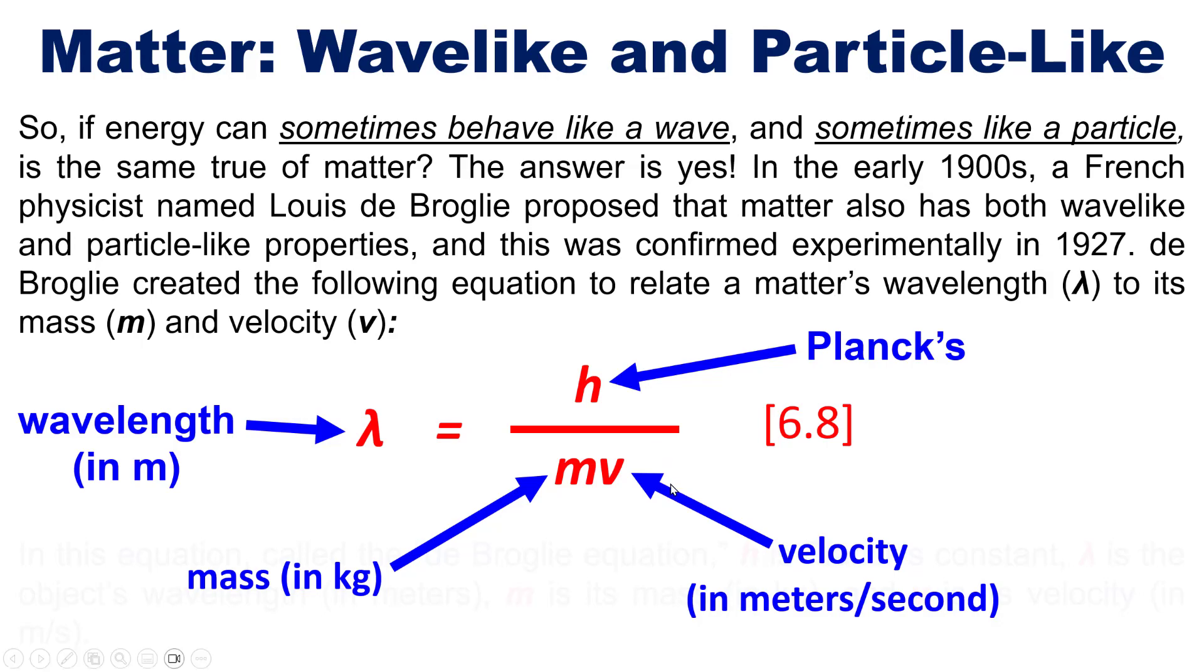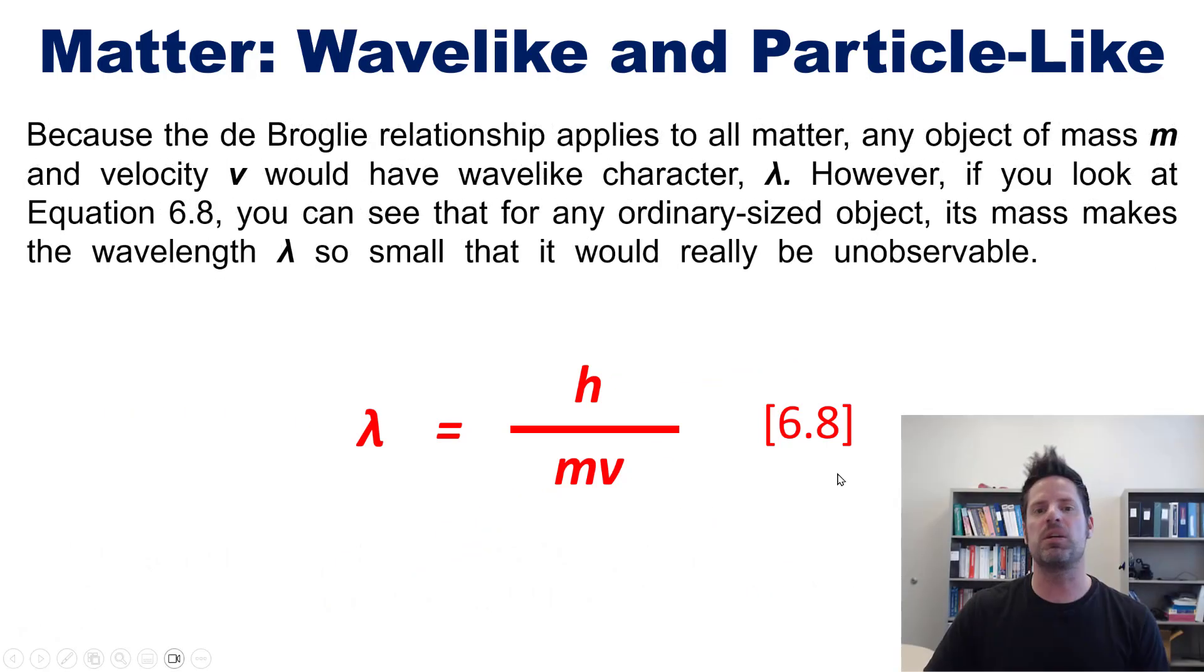Sorry about that. I don't make the stuff up. I just teach it. Now, because the de Broglie relationship applies to all matter, any object of mass m and velocity v would have wave-like character lambda.